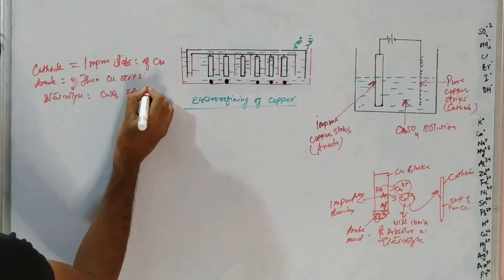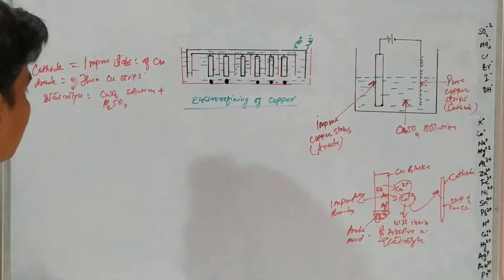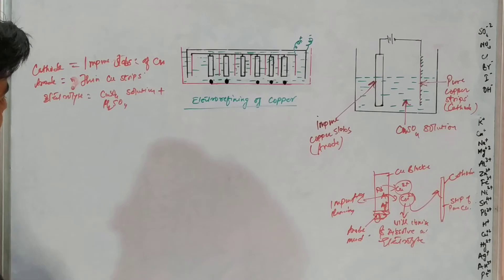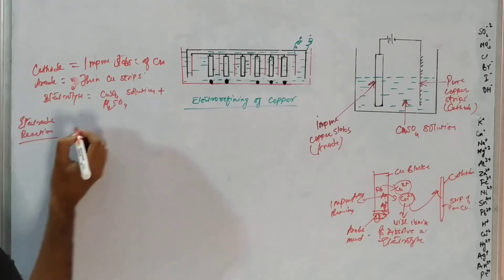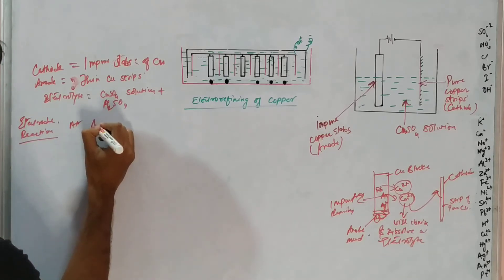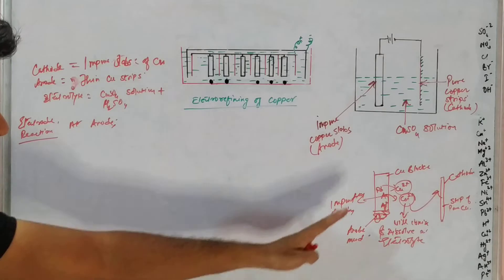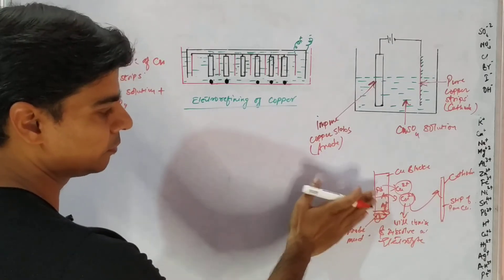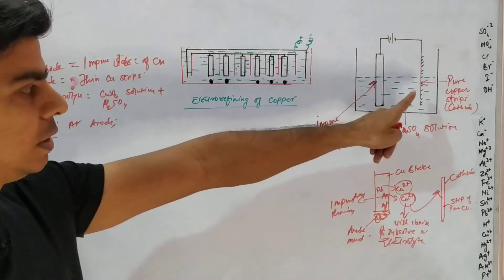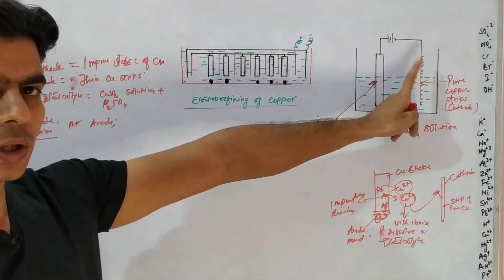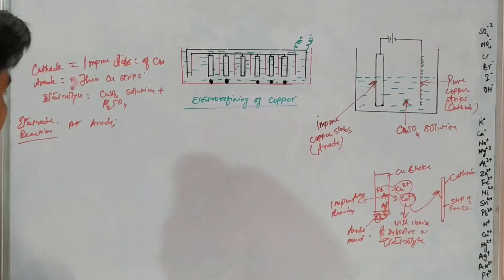The electrolyte is copper sulfate solution plus dilute sulfuric acid — the acid is added just to increase the electrical conductivity. Now let's look at the electrode reactions. At the anode, which is the impure copper slab, pure copper will dissolve in the form of copper ions and enter the electrolyte, from which it will migrate to the cathode and keep depositing there.